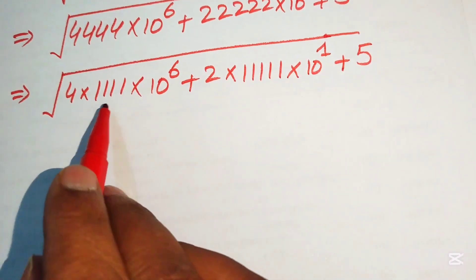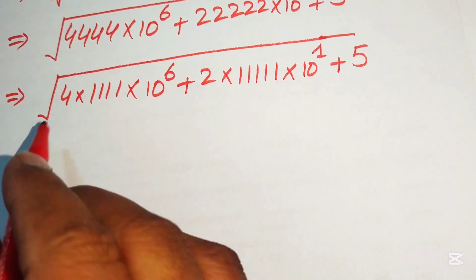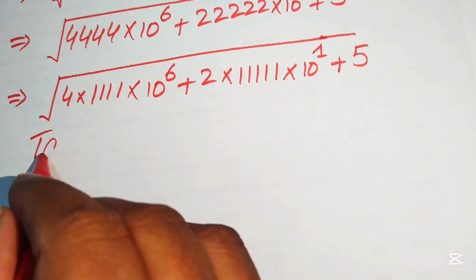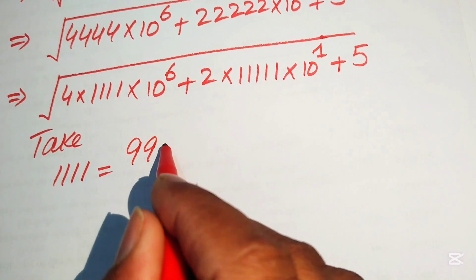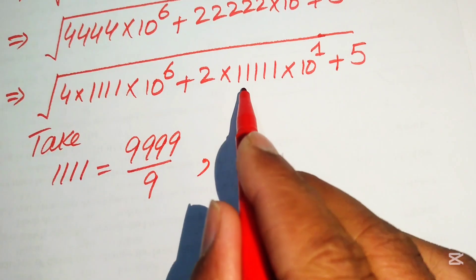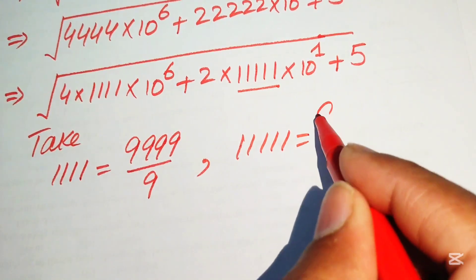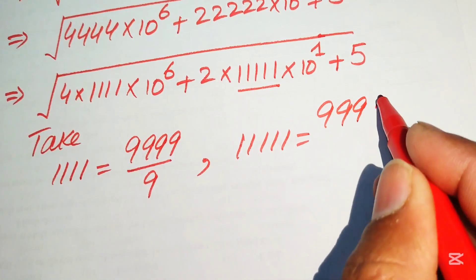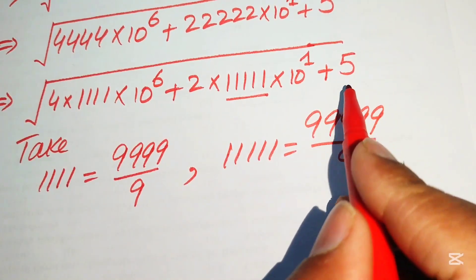Now we simplify the repunit 1111. We write 1111 as 9999 divided by 9. Similarly, the 5-times repunit 111111 equals 99999 divided by 9, so we need more simplification.